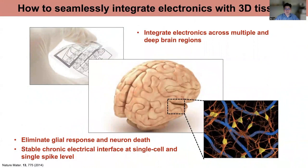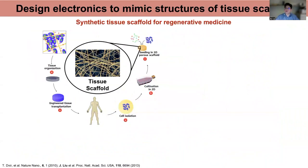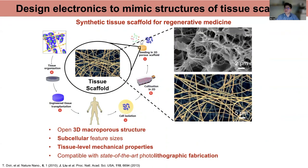In the first part of my research, we asked: can we design electronics that eliminate the immune response and neural death from implantation, to provide a long-term stable electrical interface at the single-cell level? Looking at history, there is a material system that bypasses this immune response and mechanical mismatch — the synthetic tissue scaffold, a three-dimensional micro-porous soft biomaterial. It allows cells to grow into it, and once transplanted back to the human body, it does not trigger chronic immune response. We are trying to build electronics that mimic this structure.